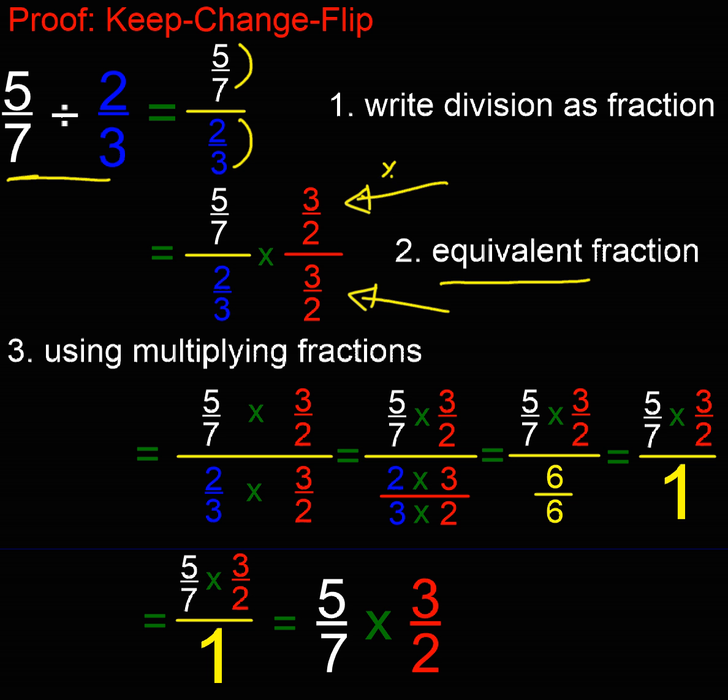Yeah, so I could have multiplied by 7 top and bottom, couldn't I? Something like that. But in this case, I've chosen to multiply top and bottom by 3 over 2. I've chosen 3 over 2 because it's the reciprocal of 2 over 3. And that will help us in a minute.